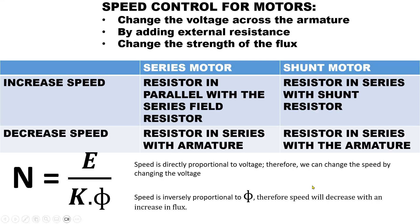For speed control, we have the series motor and the shunt motor. If you want to increase the speed of a series motor, you put a resistor in parallel with the series field. If you want to increase the speed for a shunt motor, you put a resistor in series with the shunt resistor. If you want to decrease the speed, you do the same thing for both the series motor and shunt motor — you put a resistor in series with the armature field.